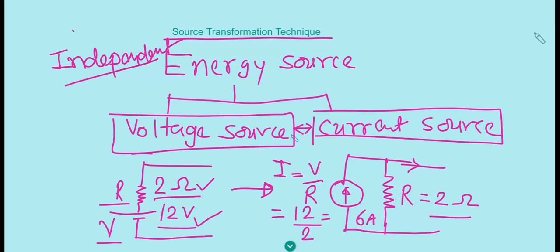Similarly you can do the opposite. If a 6-ampere current source is given in parallel with 2 ohms and you want to convert that into a voltage source, you have I and R so you can find V using V = I × R: 6 into 2 gives 12 volts in series with a 2-ohm resistance. In this way you can convert a voltage source into a current source or a current source into a voltage source.